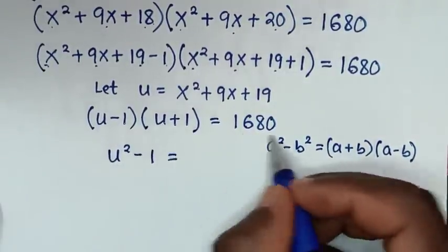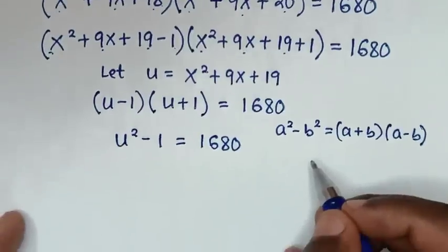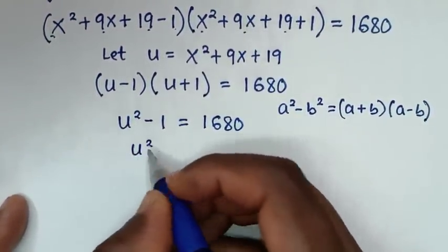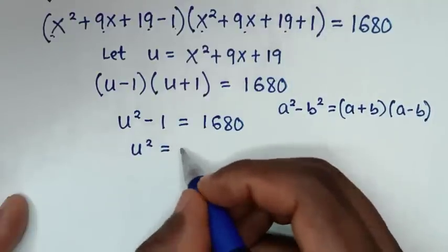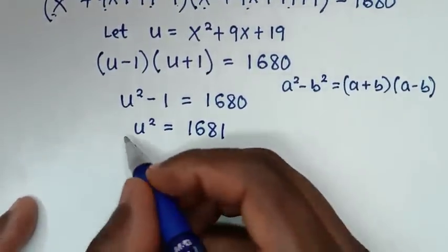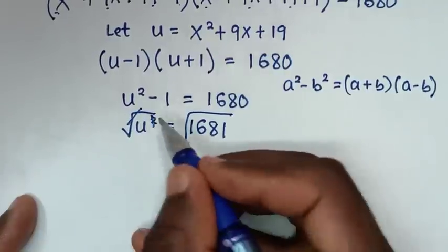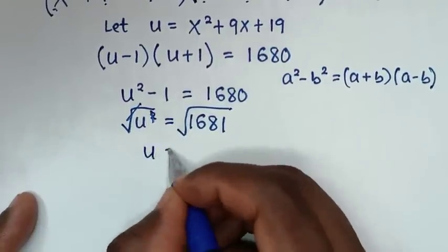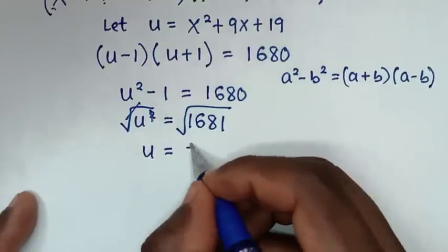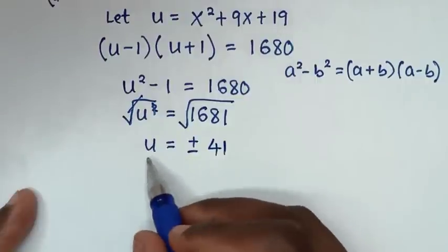Taking the -1 to the right side gives u² = 1681. Applying square root to both sides, u = ±√1681 = ±41.